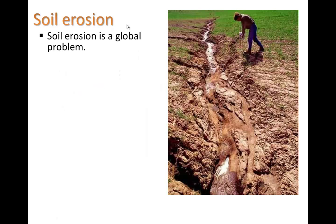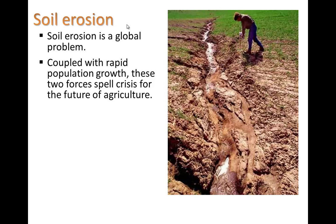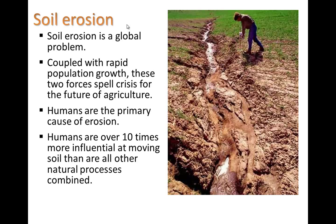Soil erosion is a global problem, and it's coupled with rapid population growth. These two forces spell crisis for the future of agriculture. We're trying to get more and more yield out of our land because we have more and more people, but that's overtaxing the land. At the same time, we are having a loss of topsoil. Humans are the primary cause of erosion — humans are over 10 times more influential at moving soil than all other natural processes combined.